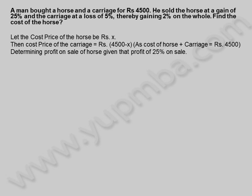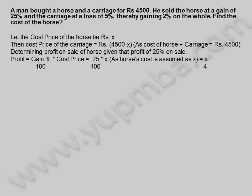Determining profit on sale of horse given that profit of 25% on sale. Profit is equal to gain percentage divided by 100 into cost price, which is equal to 25 by 100 into X, as horse's cost is assumed as X, which equals X by 4.